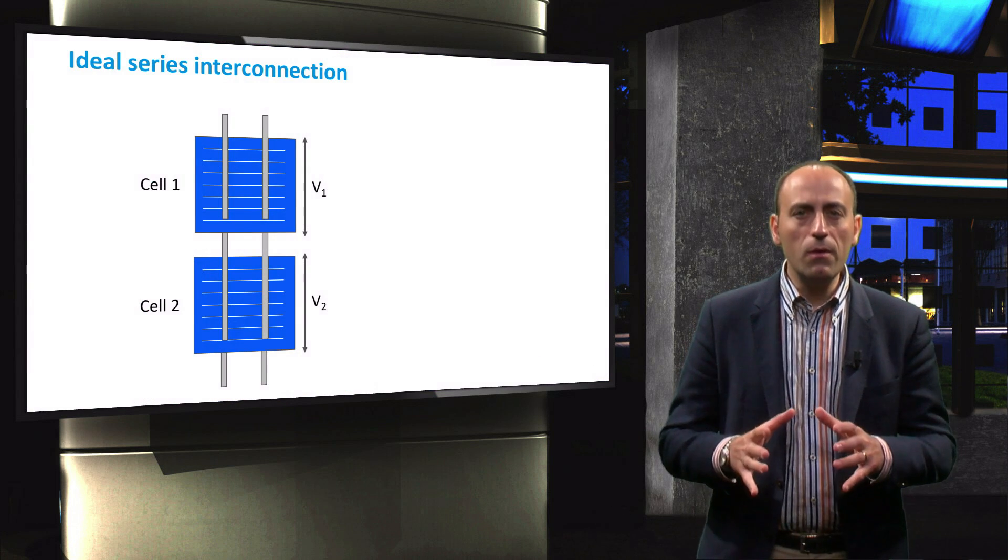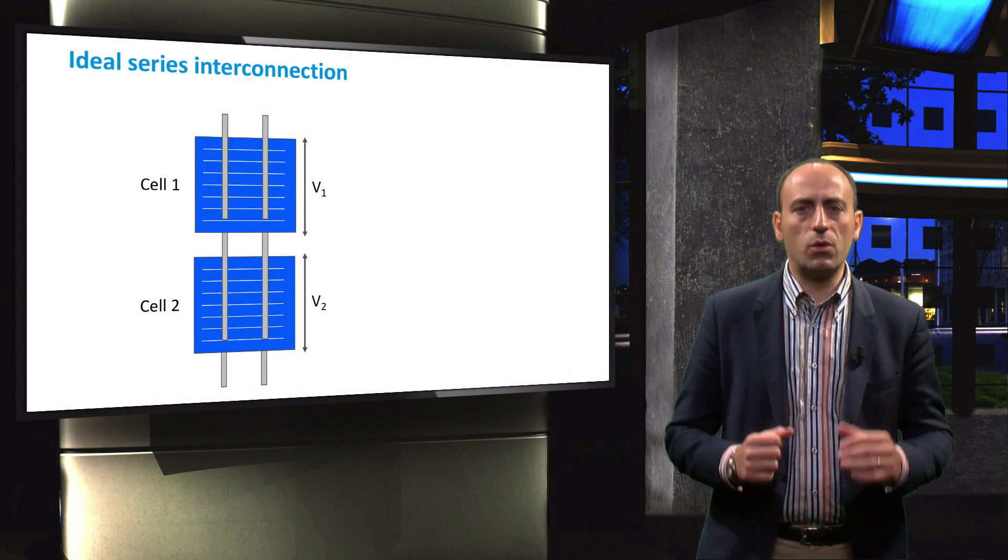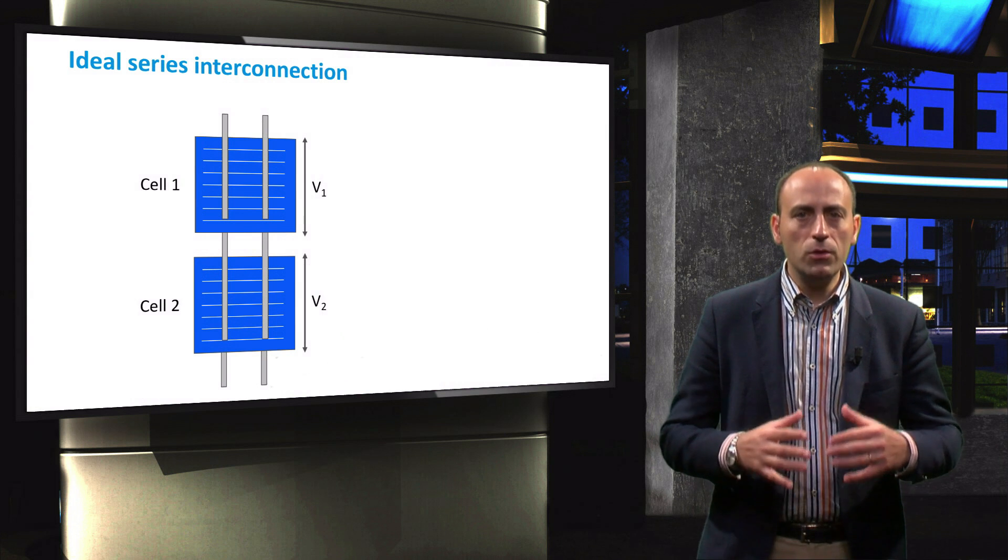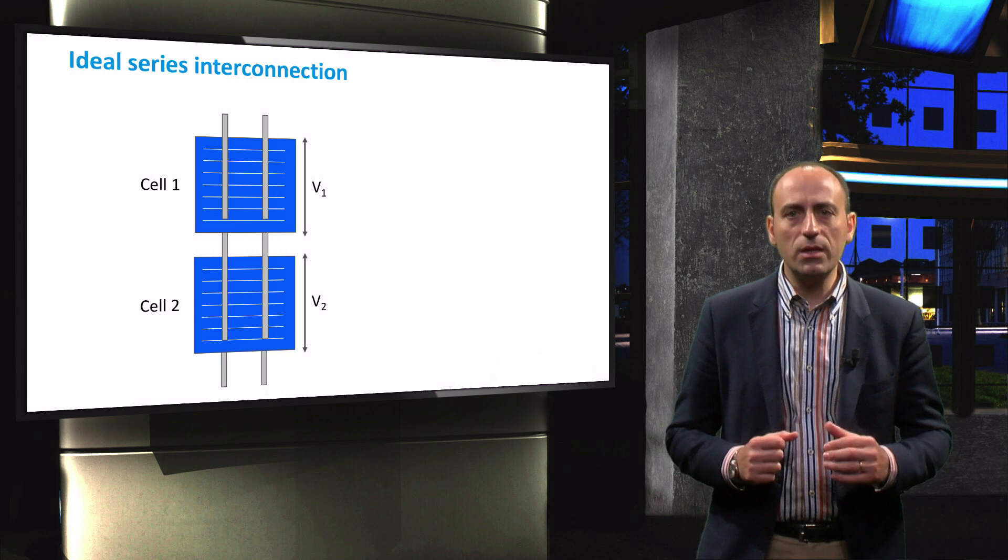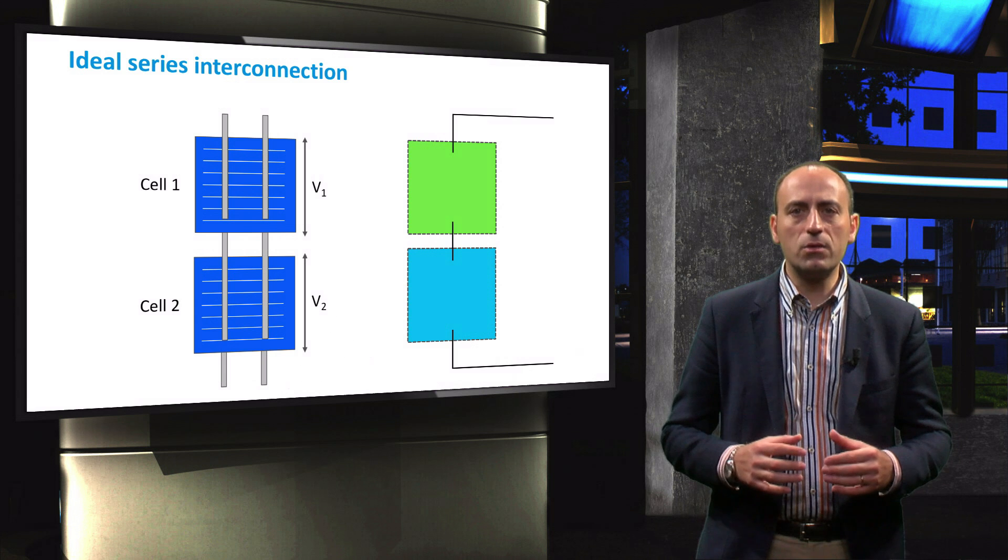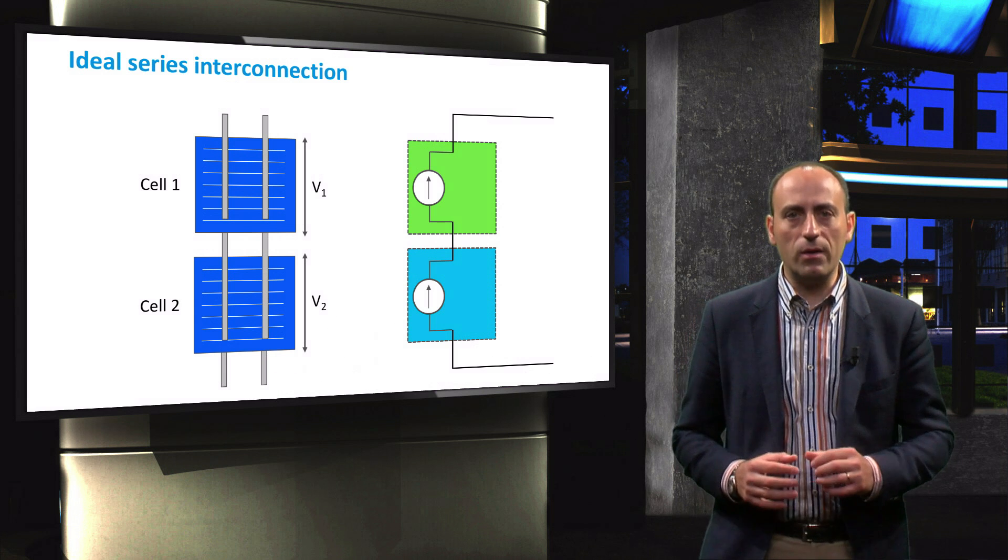In particular, let's look at the series connection between two solar cells. Ideally, the two cells have the same voltage and current. In the equivalent circuit, the cell is represented by means of a current generator and a diode placed in parallel.